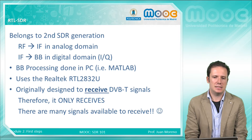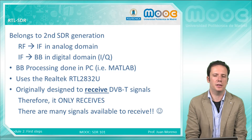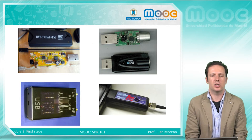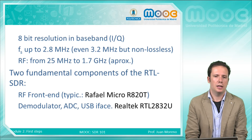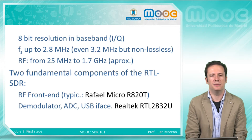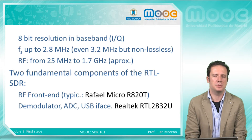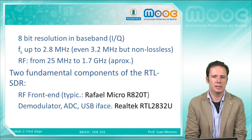The only drawback is that this SDR device only receives — it is not able to transmit anything. The good point is that there are many signals out there available to receive. There are several different packages for the same RTL device. Remember that we have 8-bit resolution in baseband, both in the phase and quadrature branches. The maximum sampling frequency is 2.8 MHz — you may get a slightly higher value but you will suffer from data losses.